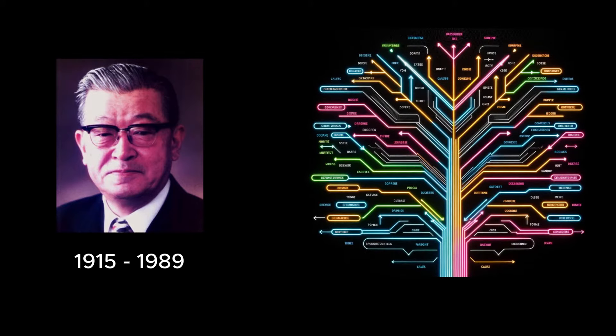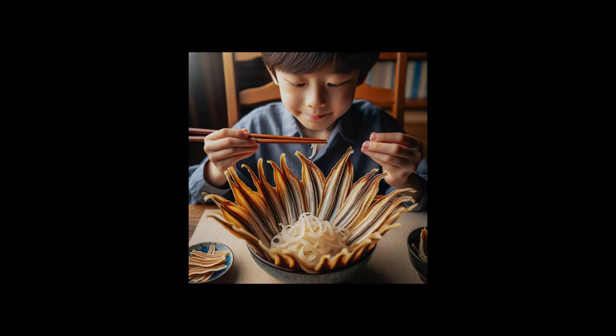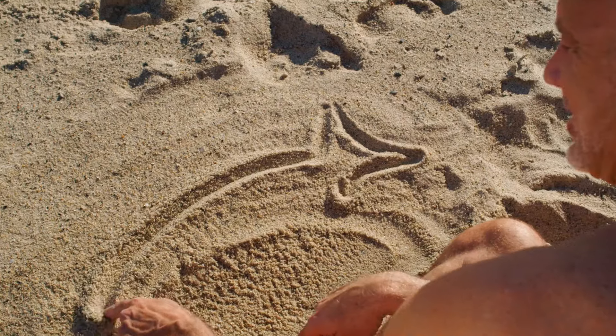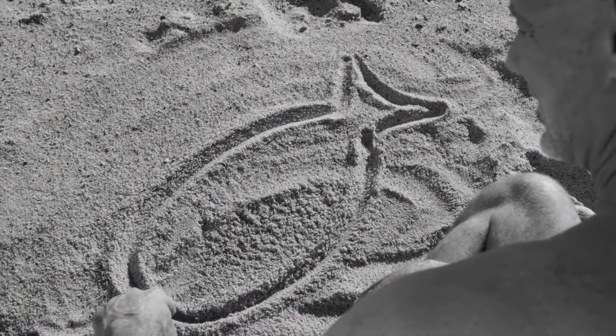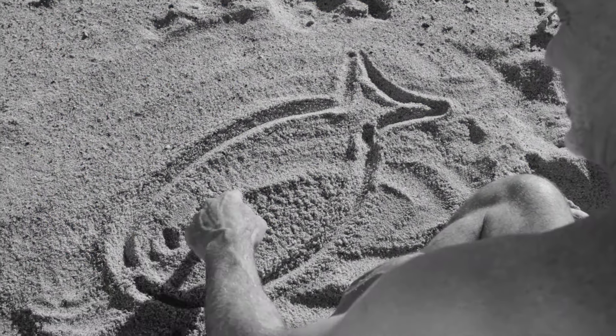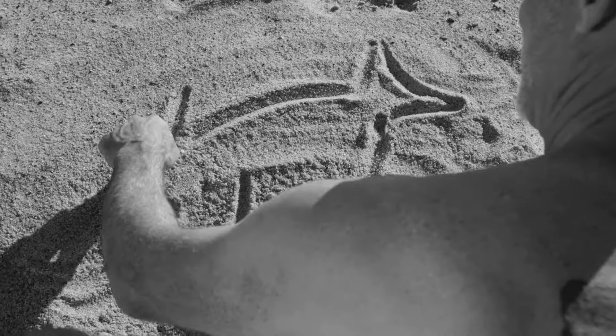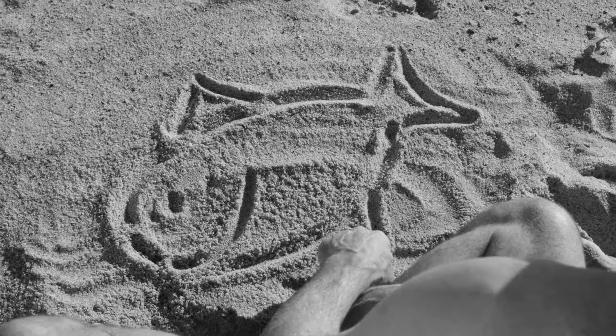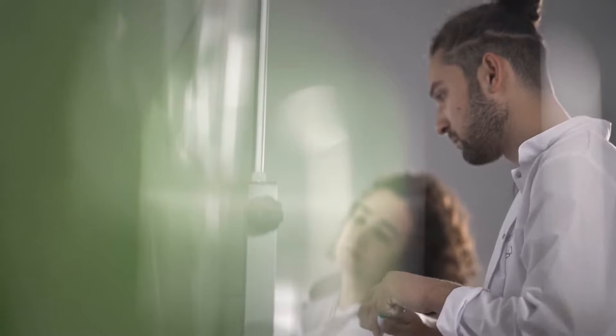The diagram was developed by the Japanese professor Kaoru Ishikawa in the 1960s. Inspired by the visual concept of a fishbone structure, Professor Ishikawa applied the idea of breaking down a fishbone into smaller parts to problem-solving. This tool became a cornerstone in quality management and continues to serve as a pillar of problem-solving methodologies worldwide.